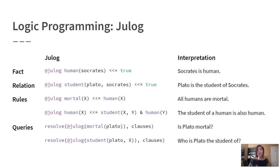Julog brings both this syntax and this reasoning engine to Julia, allowing Julia programmers to natively express declarative logical knowledge about a domain, and then perform queries over that knowledge base. Prolog-like syntax is supported using the @julog macro, and reasoning is performed by a Julia implementation of Prolog's reasoning algorithm.